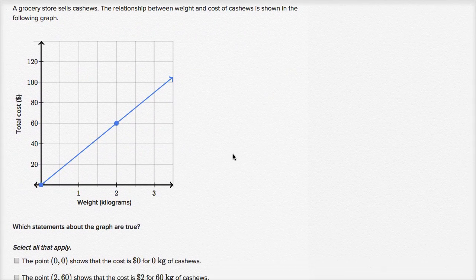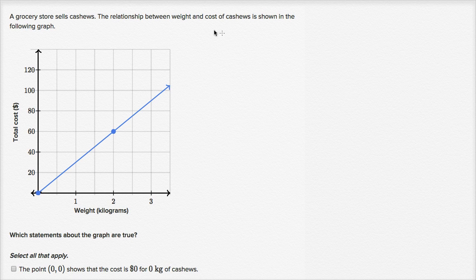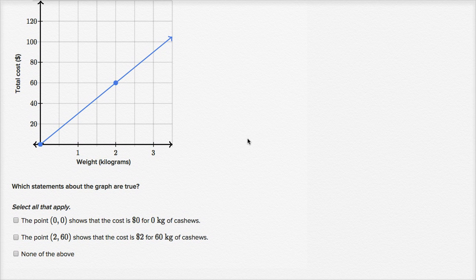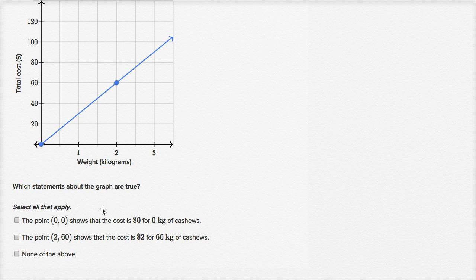A grocery store sells cashews. The relationship between weight and cost of cashews is shown in the following graph. Once again, we see it's a proportional relationship — it goes through the origin and it is a line. The first statement: the point shows the cost is zero dollars for zero kilograms of cashews. Yes — zero kilograms of cashews costs zero dollars. That makes sense.